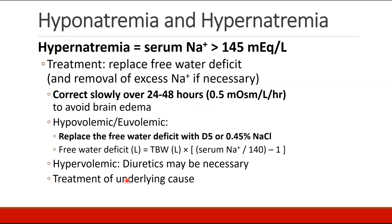The treatment for hypernatremia will depend on the underlying cause. The goal is to replace the free water deficit and remove any excess sodium if necessary. It should be corrected slowly over about 24 to 48 hours with a goal of changing osmolarity by about 0.5 milliequivalents per liter per hour in order to avoid brain edema. If the patient has hypovolemic hypernatremia, the goal is to replace the free water deficit, which can be done with D5 or 0.45% sodium chloride. The free water deficit can be calculated using the equation: free water deficit (in liters) equals total body water times (serum sodium divided by 140, minus 1).